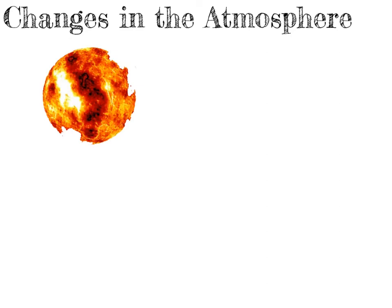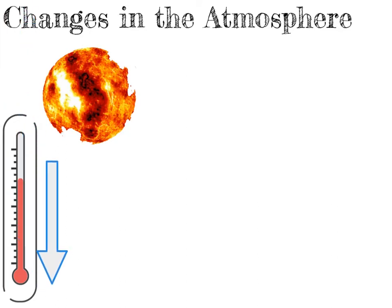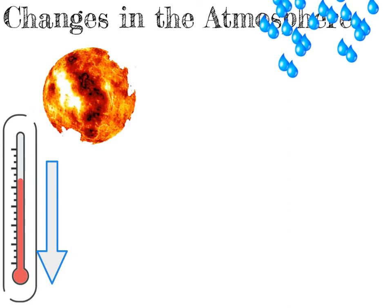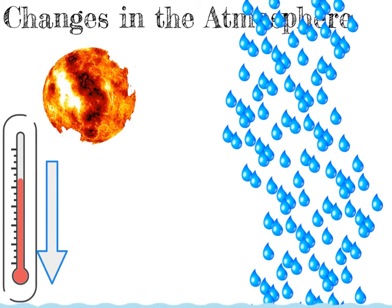When the Earth first formed it was an extremely hot place. Over time, the Earth cooled down, volcanoes formed on the surface, and volcanoes gave out a lot of gases — one of which was water vapour. As the Earth's temperature continued to cool, when the water vapour reached a temperature below 100 degrees, the water vapour could condense and turn into liquid water. That liquid water fell to the Earth as rain — loads and loads of rain — so much so that it formed the oceans.